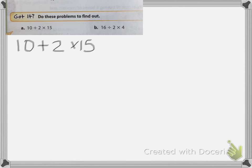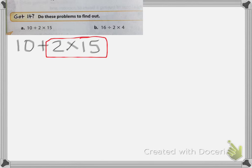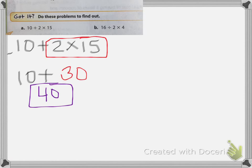Welcome back. The first thing is to copy the problem: 10 plus 2 times 15. There are no parentheses, no exponents. Now we do multiplication: put a box around 2 times 15. Bring down the 10 plus — anything you're not processing, you bring down. 2 times 15 is 30. The last step is to add 10 plus 30, which gives you 40. Put a box around your final answer.